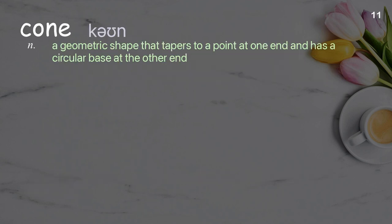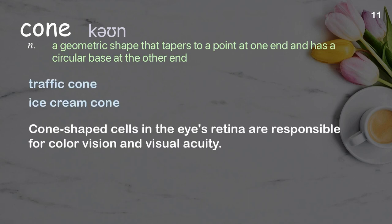Cone: A geometric shape that tapers to a point at one end and has a circular base at the other end. Examples: Traffic cone. Ice cream cone. Cone-shaped cells in the eye's retina are responsible for color vision and visual acuity.